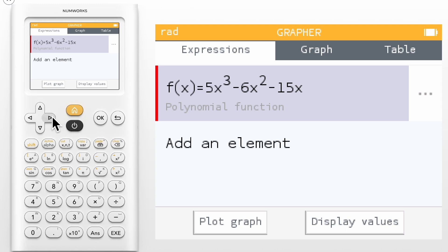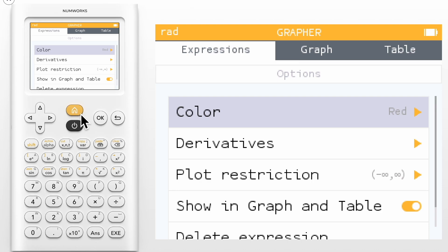In the Expressions tab, the Options can be located by selecting the three dots. In the Options, navigate to the Derivatives section and press OK.